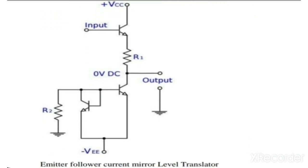We can also use a zener constant current bias with emitter follower in forming a level translator, but an emitter follower current mirror level translator is mostly used in operational amplifiers.